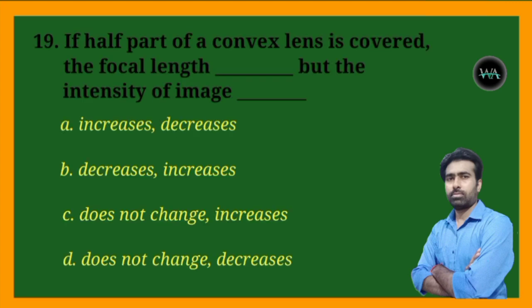Next question: if half part of a convex lens is covered, what happens to the focal length and the intensity of the image?